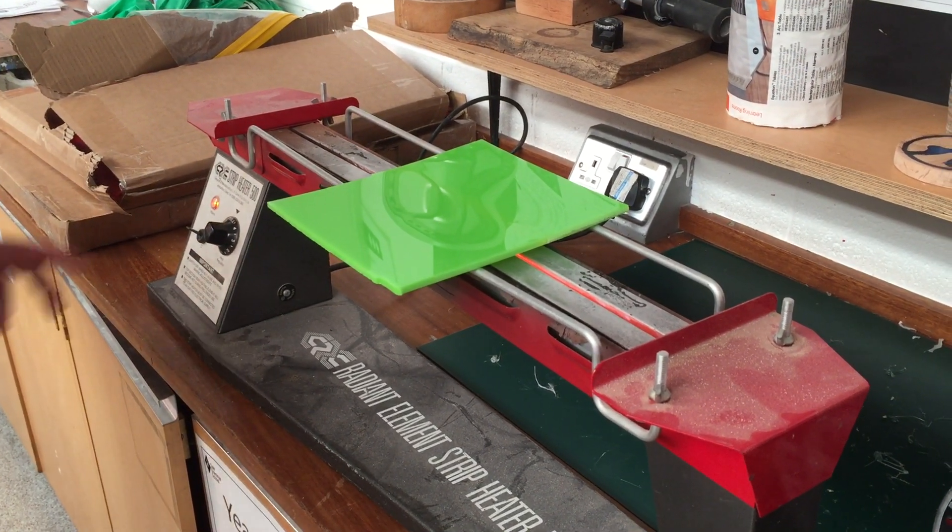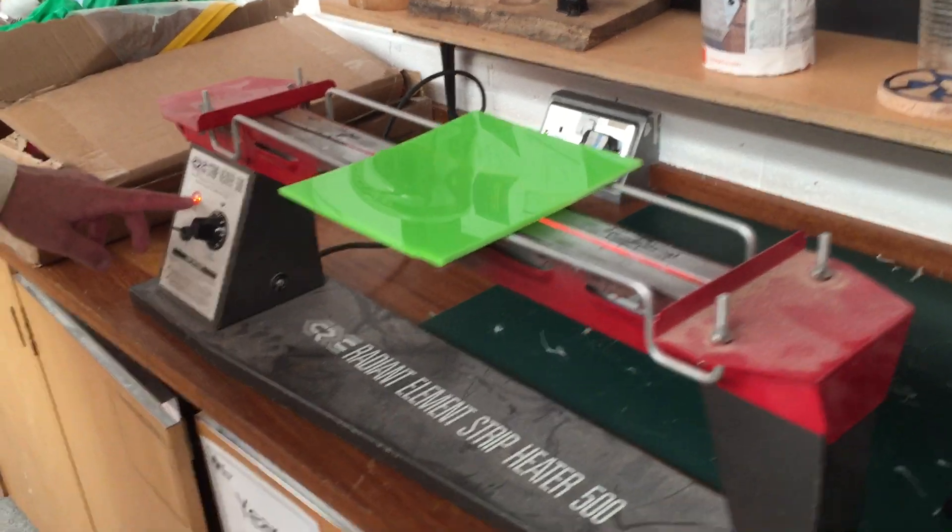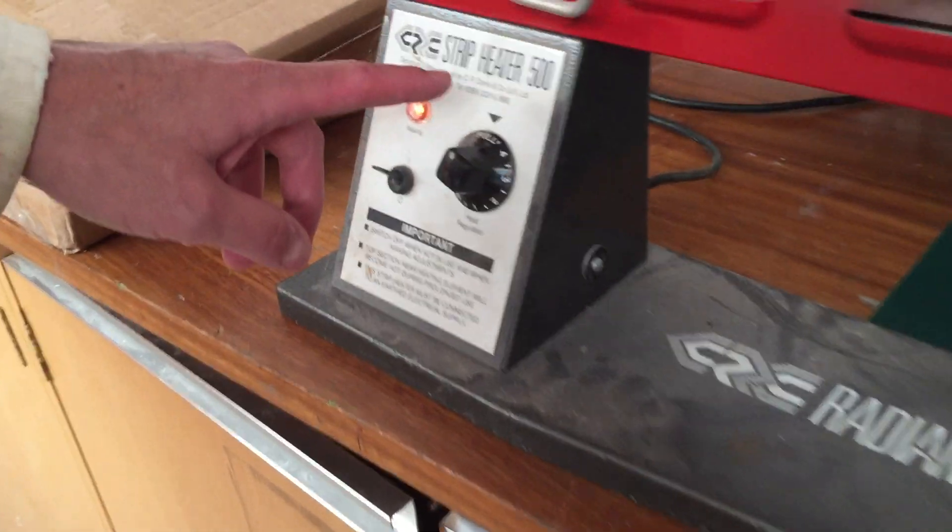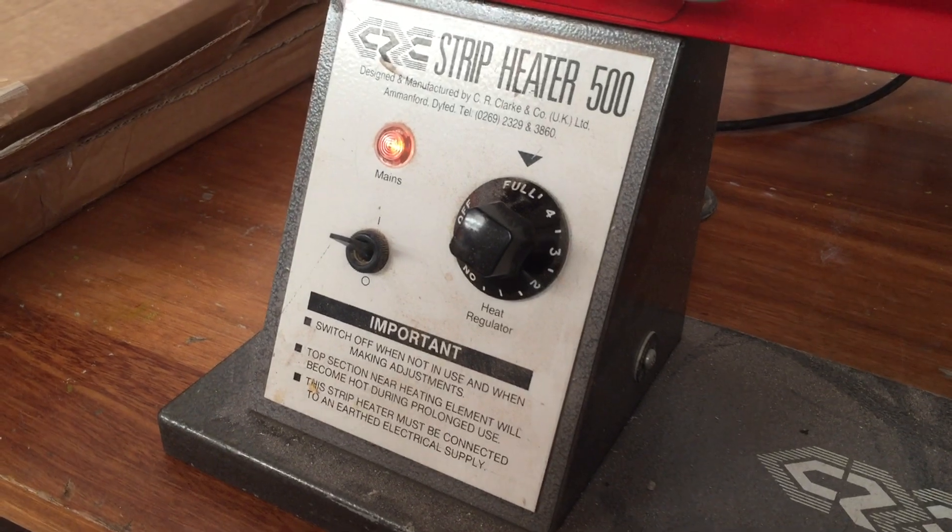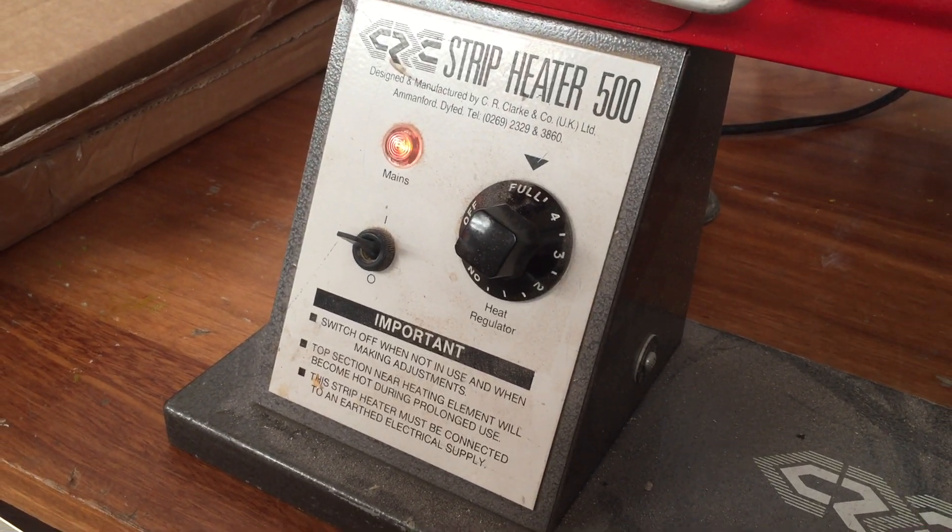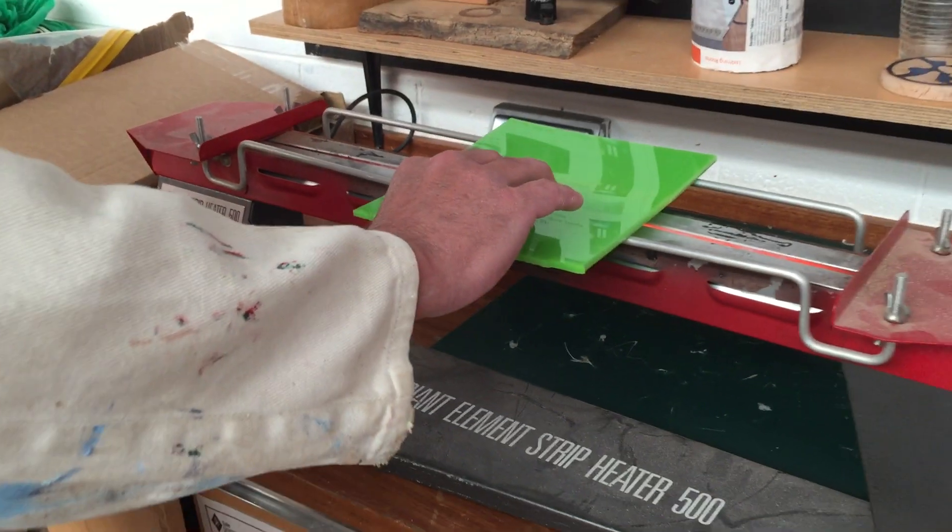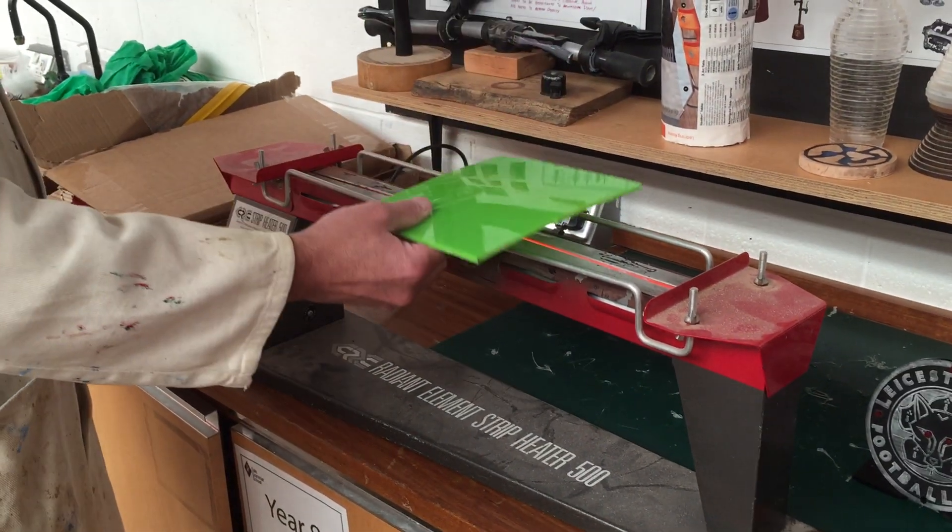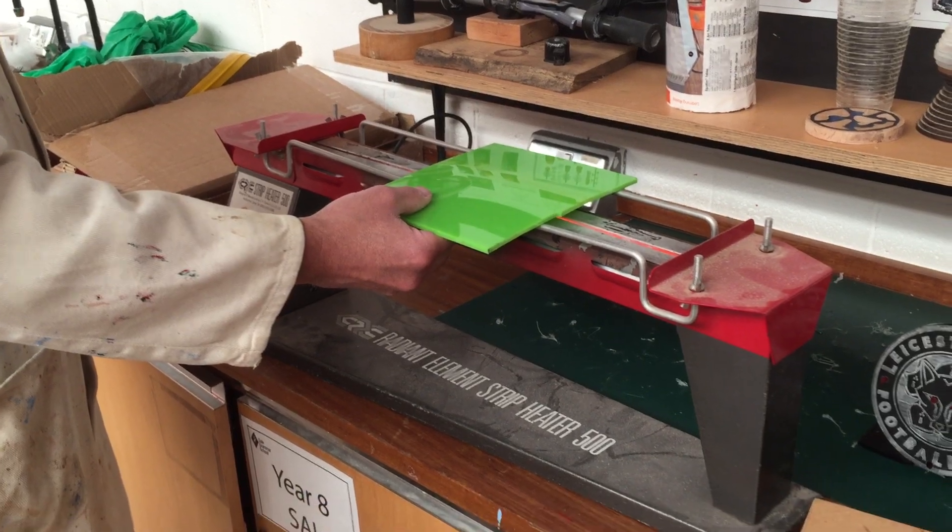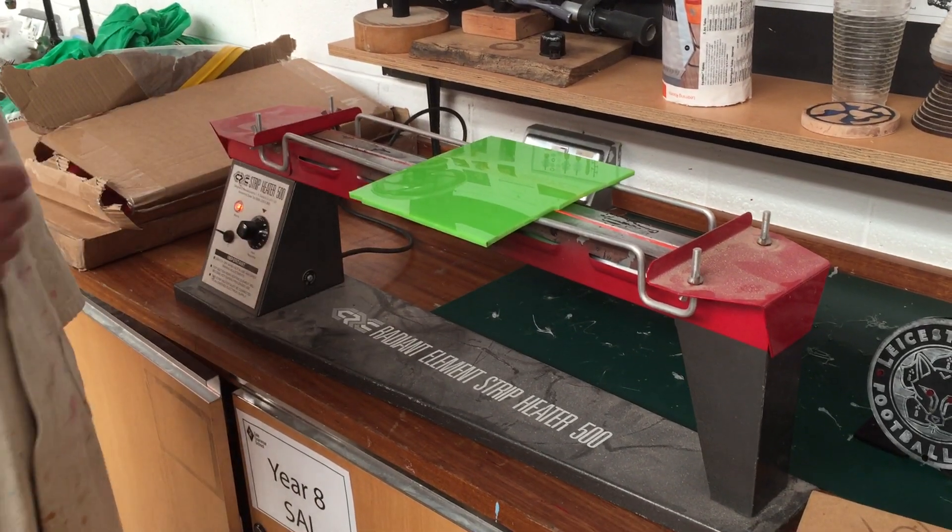Now there's no indicator lamps other than the one that says it's on and it's set to full power, but there's no indicator lamp that says that the acrylic is ready yet. It's just going to take as long as it takes. Now I'm going to turn this over like a good piece of cheese on toast so it heats evenly on both sides.